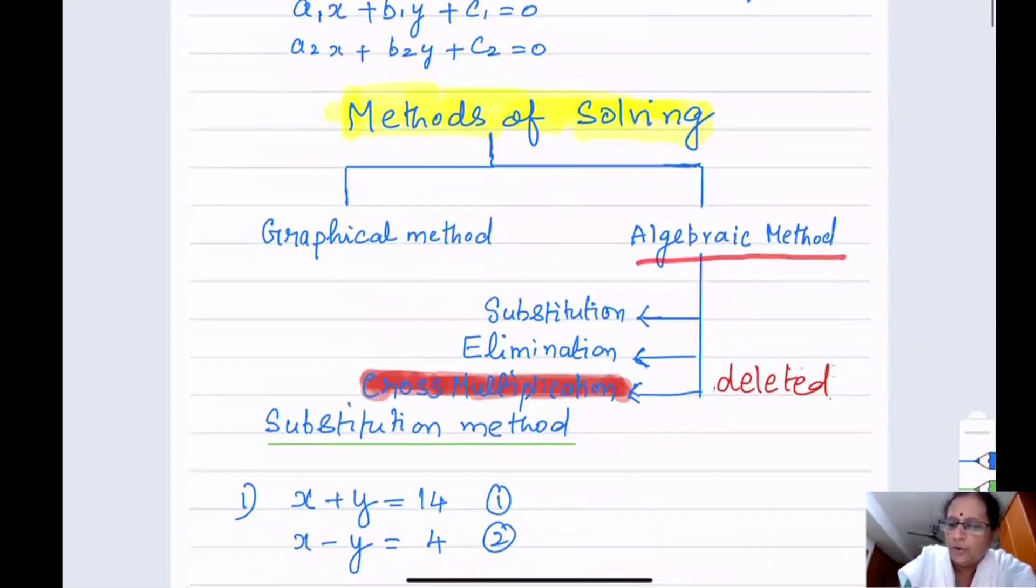In algebraic method, you have three methods: substitution method, elimination method, and cross multiplication method. This cross multiplication I have already highlighted. This is definitely deleted.